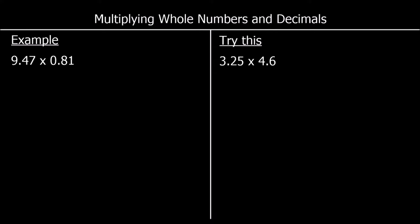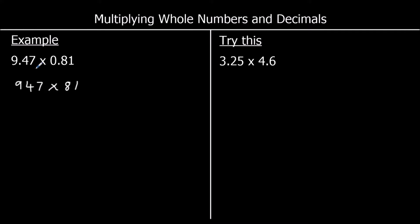Moving on to multiplying. When we multiply decimals, the first step is to get rid of the decimals. We're going to change the question 9.47 times 0.81 into 947 times 81. We've multiplied by 10 twice to get 9.47 to 947, and by 10 another two times to get 0.81 to 81. In total we've multiplied by 10 four times, so there are four decimal places to put back in at the end.